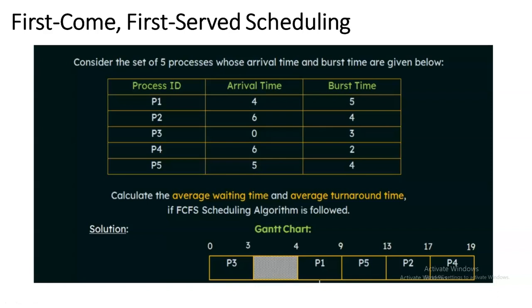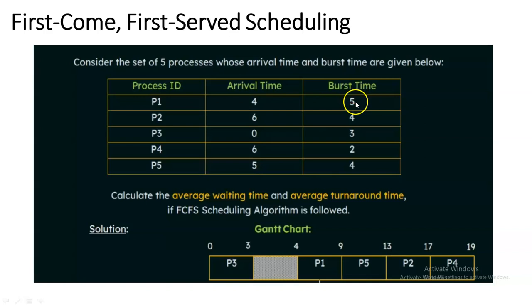P1 enters the CPU and we check for how many units of time P1 will reside inside the CPU using its burst time. The burst time of P1 is 5. P1 arrived at unit time 4, and 4 plus 5 means P1 will be completed at unit time 9. So the CPU finishes the work of P1 at unit time 9.